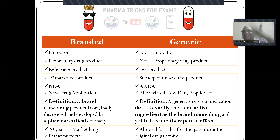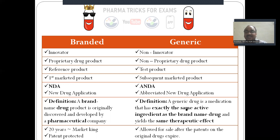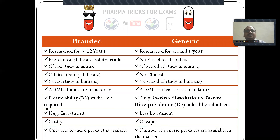Once the patent expires, many generic pharmaceutical companies — who have been waiting and preparing — can enter the market. The generic drug is called the non-innovator, non-proprietary, or test product; it is a subsequent marketed product filed under an ANDA — Abbreviated New Drug Application. It is allowed for sale only after the patent of the original drug expires.